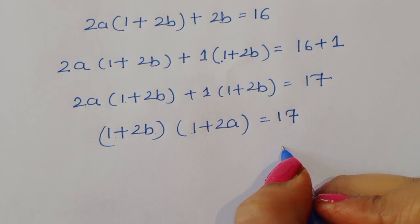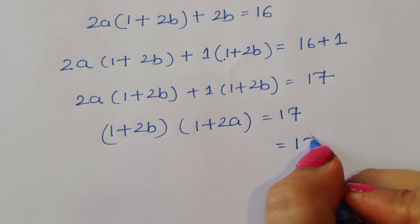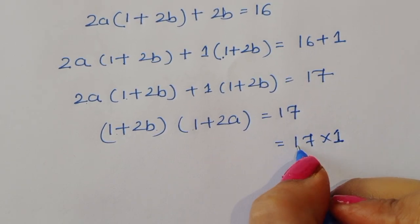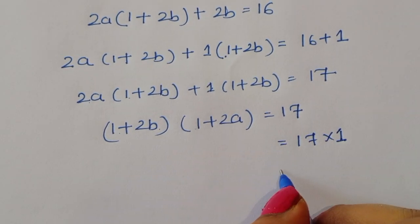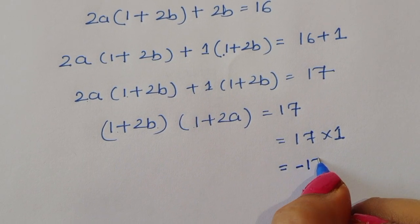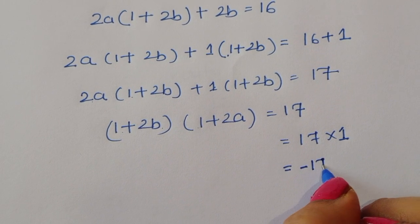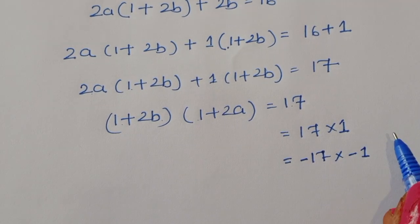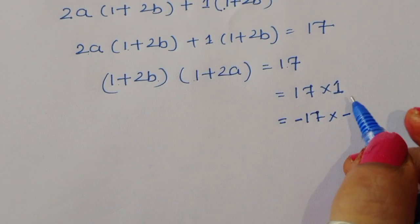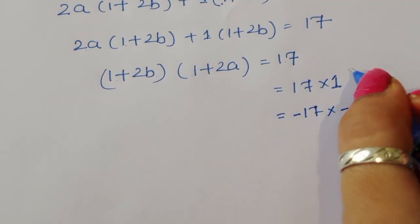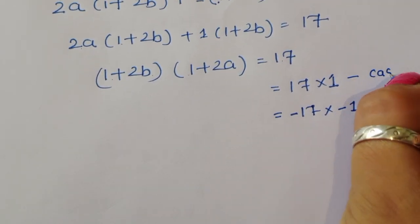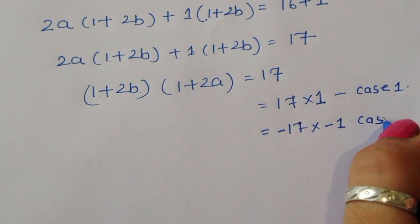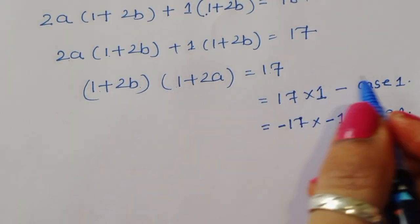We can write 17 as a product of factors: either 17 times 1, or minus 17 times minus 1. This gives us two cases — Case 1 and Case 2 — which we will solve separately.